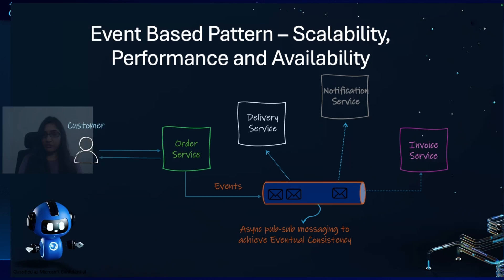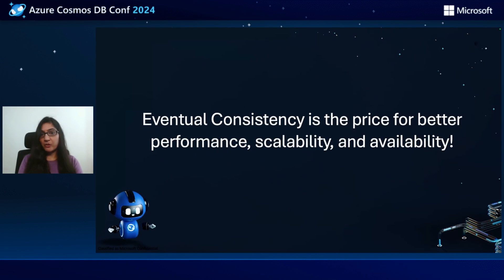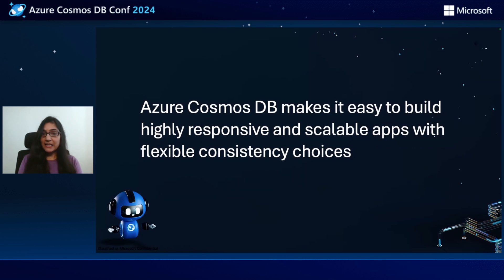So far, so good. You're getting performance, scalability, and availability, but there is a trade-off. And that trade-off is eventual consistency — that there will be temporary disparities between orders and invoices until events are processed. In this session, we are talking about how to deal with eventual consistency while building these distributed or event-driven systems using Azure Cosmos DB.